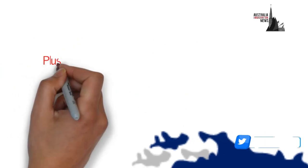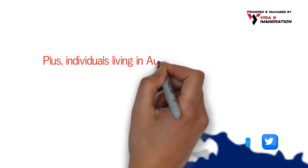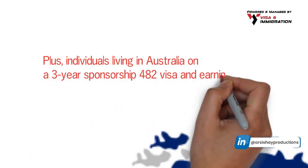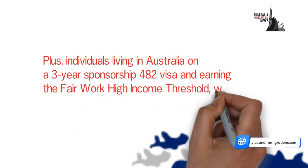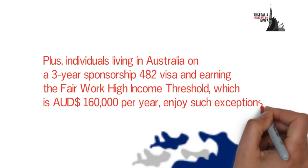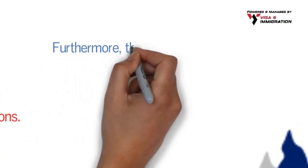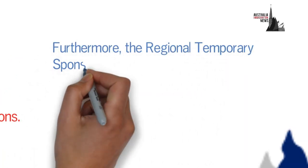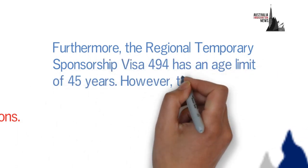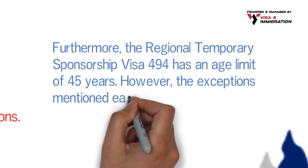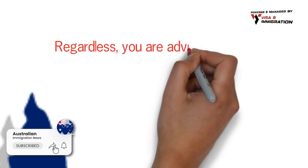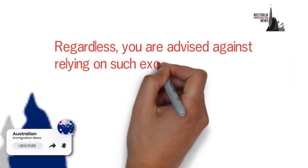Additionally, individuals living in Australia on a three-year sponsorship 482 visa and earning the Fair Work high income threshold, which is $160,000 Australian dollars per year, enjoy such exceptions. Furthermore, the Regional Temporary Sponsorship Visa Subclass 494 has an age limit of 45 years. However, the exceptions mentioned earlier also apply to this visa subclass. Regardless, you are advised against relying on such exceptions because they are very rare.